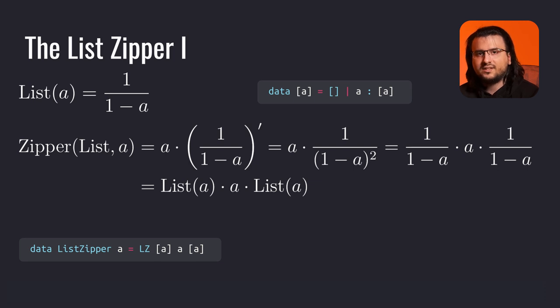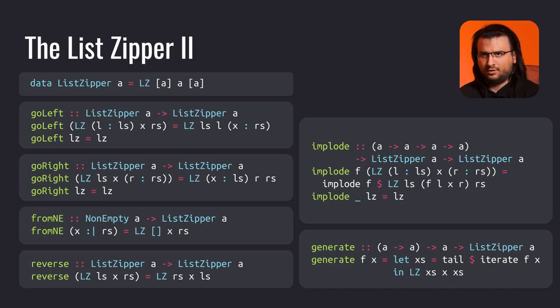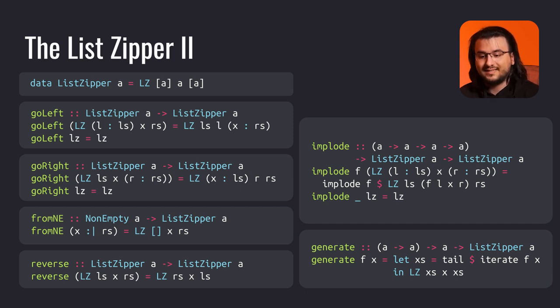A more interesting example comes with lists. Recall that the list's closed form, or generating function, is 1 over 1 minus a. The list zipper is a times the derivative of 1 over 1 minus a, which is a times 1 over (1 minus a) squared. After rearranging the terms, we get two lists and a focus value. This data type represents a location in the list, where the first list is a collection of elements to the left of the focused element and likewise for the right list. Notice how both lists can be infinite — we can think of the list zipper as a sort of Turing tape, moving left and right so long as there's space. We can also define a functor instance to modify every element.